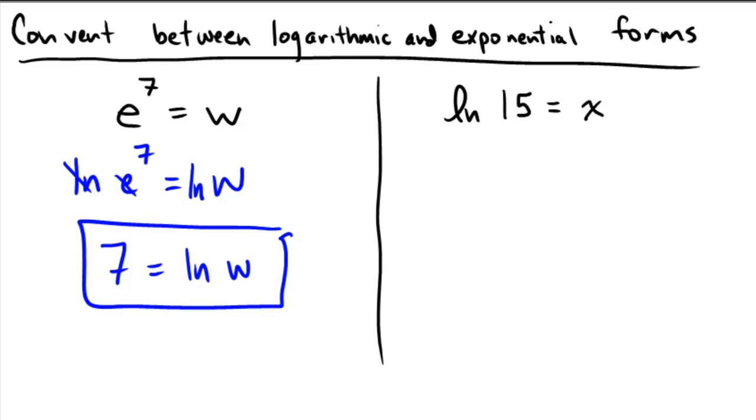On the right, we have a logarithmic form. ln is a log base e. So to undo that, we're going to raise e as a base and let these both sides become the exponents on that base of e.